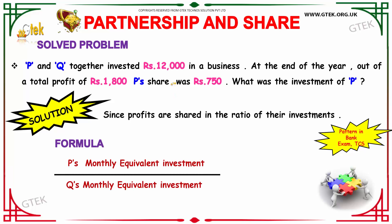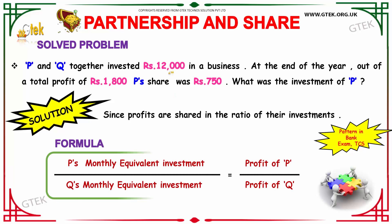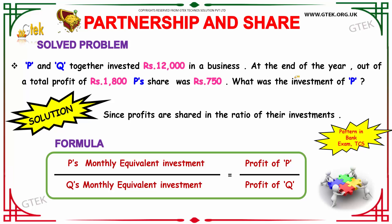P and Q together invested Rs. 12,000 in a business. At the end of the year, out of the total profit of Rs. 1800, P's share was Rs. 750. What is the investment of P? This is the question.